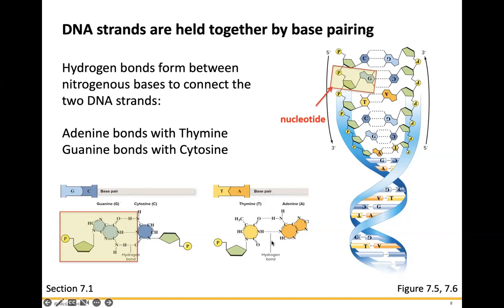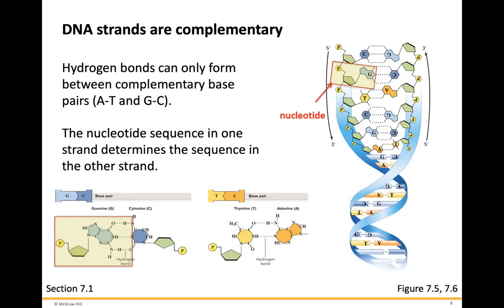A always pairs with T and G with C. The DNA strands are referred to as complementary. Hydrogen bonds can only form between complementary bases — A can only hydrogen bond with T, and G can only hydrogen bond with C. The nucleotide sequence in one strand determines the sequence of the other strand. For example, if you have a T in one strand, the complementary strand has to have an A. If you have a C, the complementary strand has to have a G.